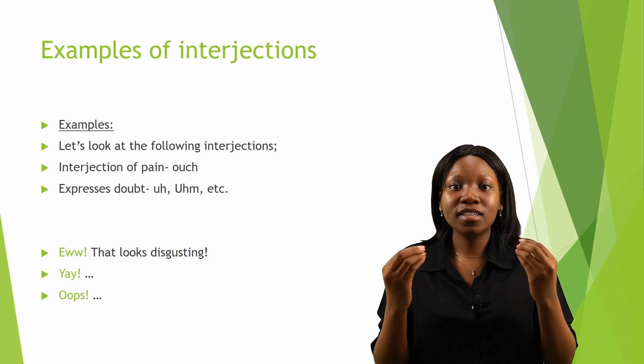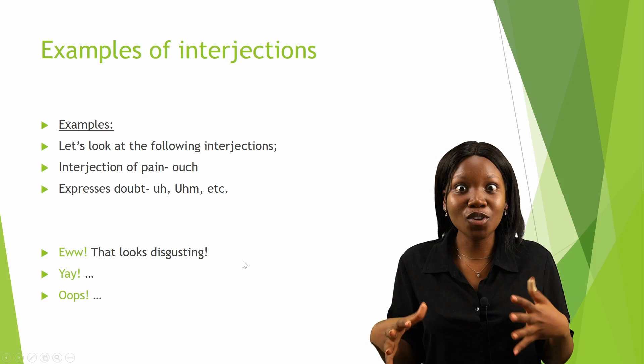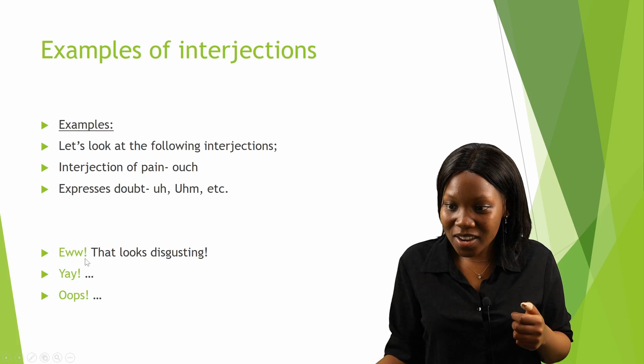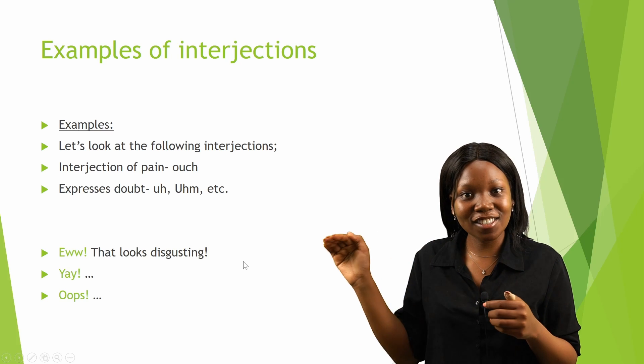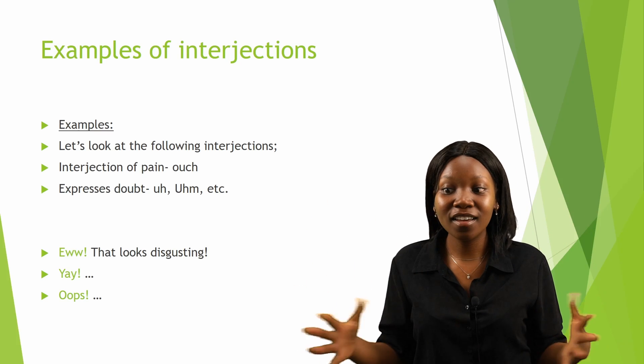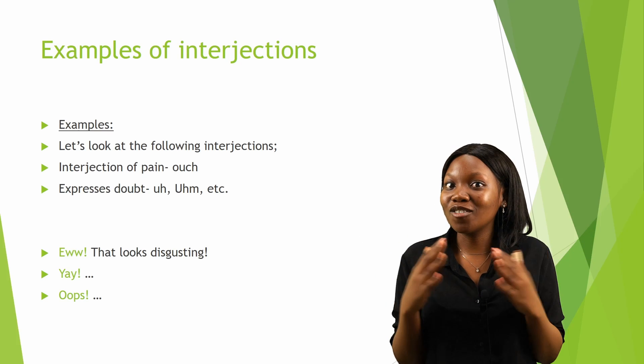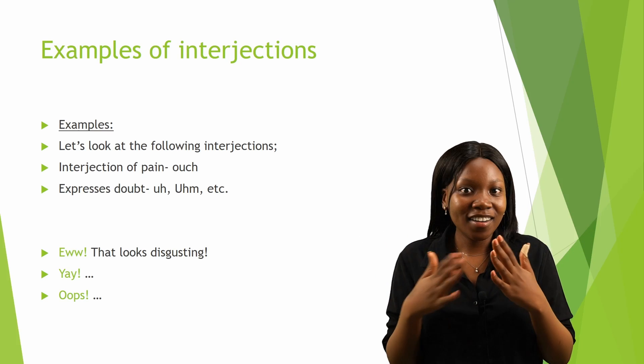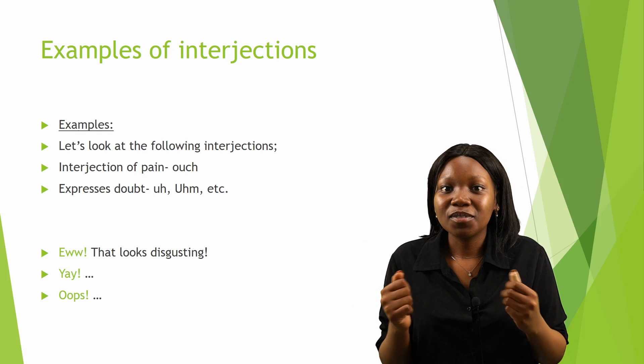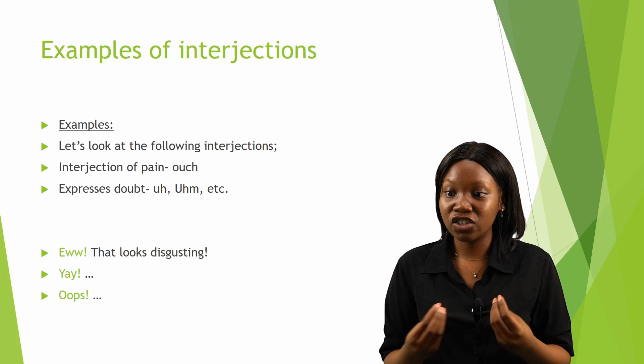And also when I say 'Yay!' - you can see over there we have three ellipses, that means the sentence is still continuing. But if I say 'Yay!', that means I am happy or excited about something. And if I say 'Oops!', that means I either dropped something or there is just something that is wrong. I hope that makes sense and you now understand what interjections are.